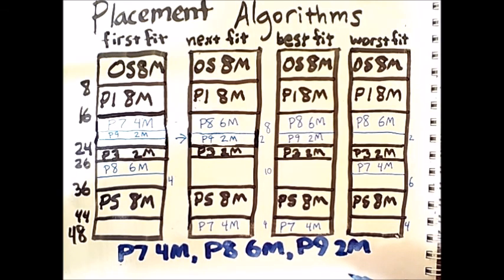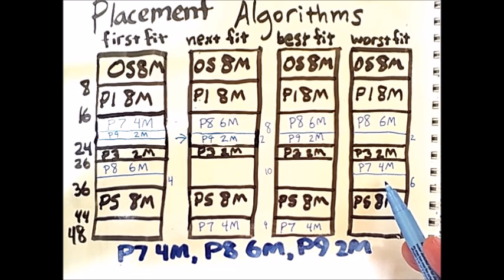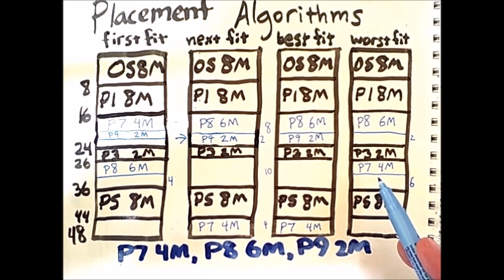Worst fit considers 3 options, a 2 megabyte slot, a 6 megabyte slot, and a 4 megabyte slot. Placing this 2 megabyte process into this 6 megabyte slot leaves the most leftover empty space. Therefore, worst fit will place process 9 here.